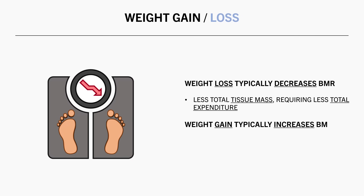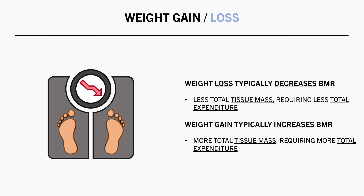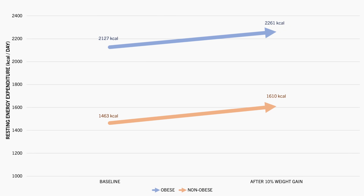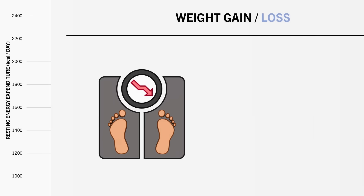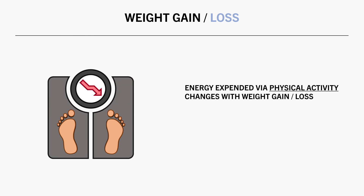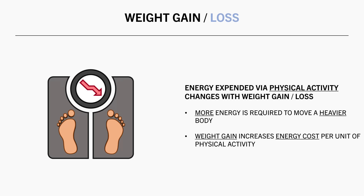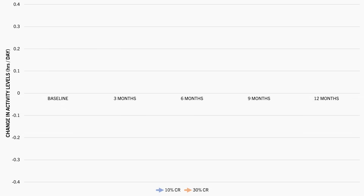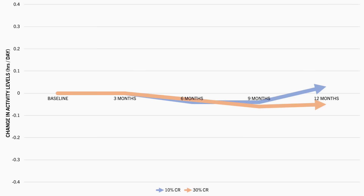Similarly, metabolic rate tends to increase with weight gain, because we have more total tissue mass which requires more energy to sustain at rest. This study found that resting energy expenditure increased by around 140 calories per day in both non-obese and obese subjects gaining 10% of their initial body weight. Furthermore, the amount of energy expended via physical activity also seems to change with weight gain and weight loss — it requires more energy to move a heavier body. This was observed in a study which found that weight loss over 12 months resulted in a decrease in energy burned via physical activity, with more weight loss resulting in greater reductions.